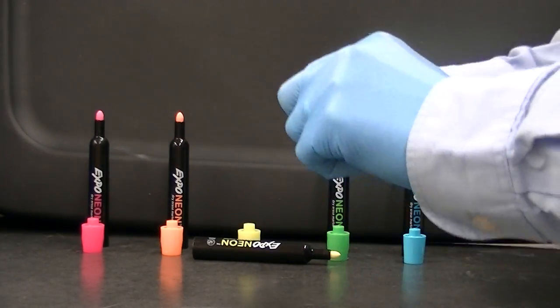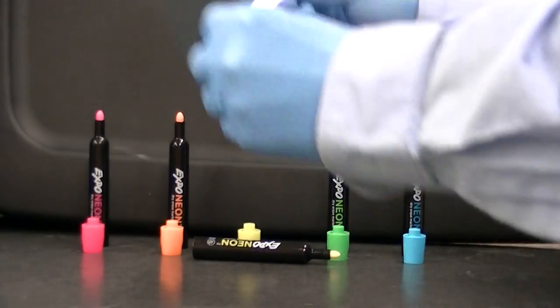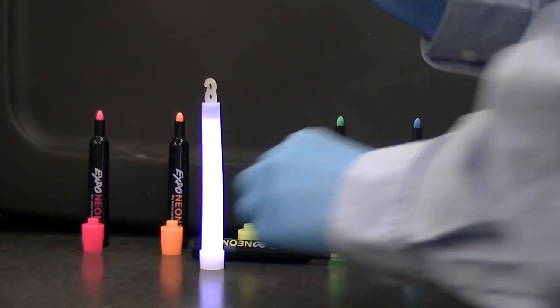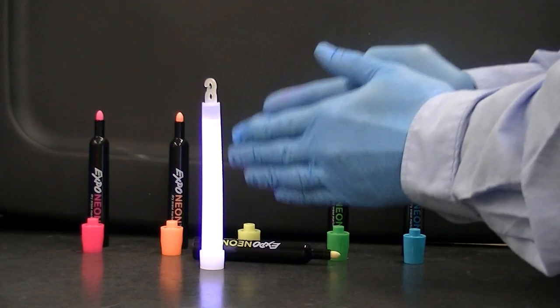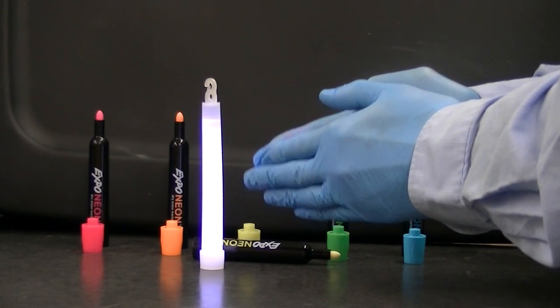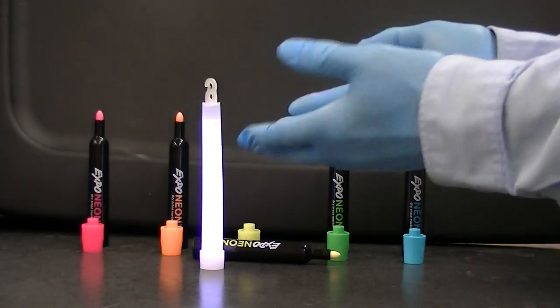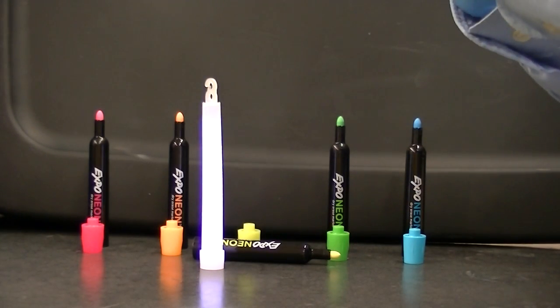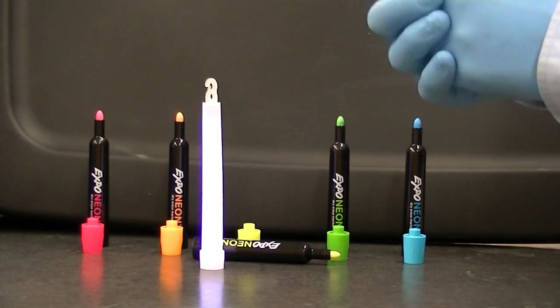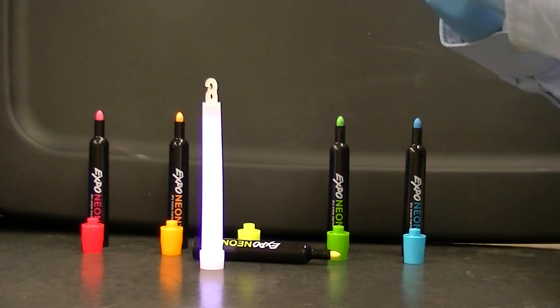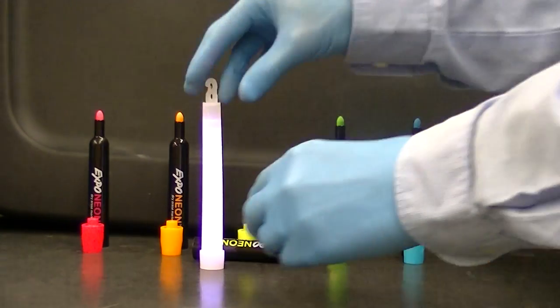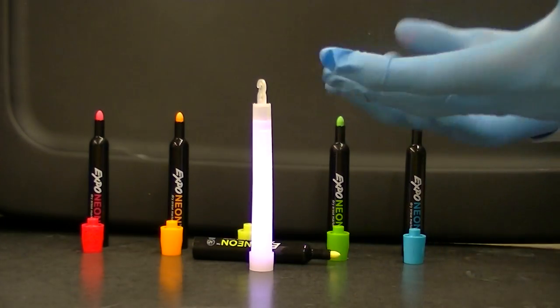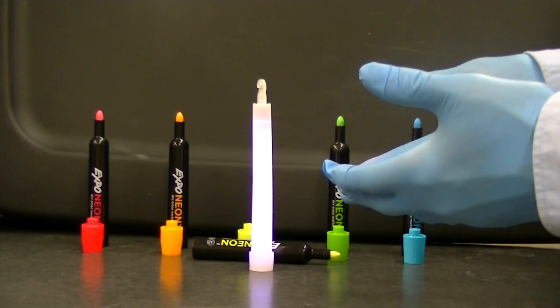So in this white light stick, there's a mixture of dyes that, instead of gaining energy from ultraviolet light, gain energy from a chemical reaction going on inside the light stick. The dyes that gain that chemical energy vibrate a little more, but they also use some of the chemical energy to emit visible light. Different fluorescent dyes are going to emit different colors of visible light. So if you want a different colored light stick, you just use different colored dyes.